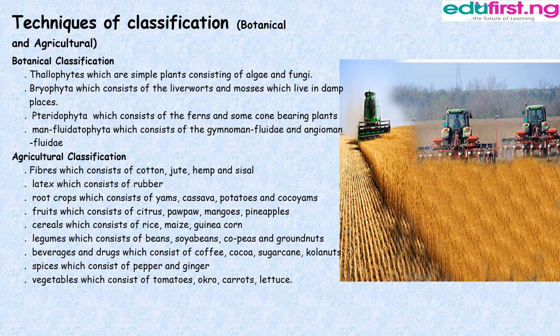Cereals, which consists of rice, maize, and guinea corn. Legumes, which consists of beans, soya beans, cowpeas, and groundnuts. Beverages and drugs, which consists of coffee, cocoa, sugarcane, and cola nuts. Spices, which consists of pepper and ginger. Vegetables, which consists of tomatoes, okra, carrots, and lettuce.